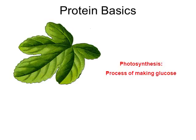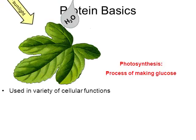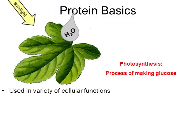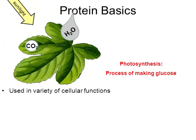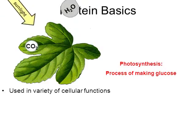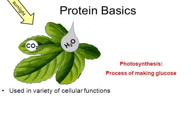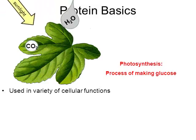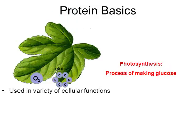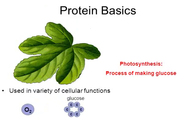A few basics first about proteins. Proteins are used in a wide variety of cellular functions. Later in the school year, we're going to go into photosynthesis in more detail. From the animation, you can see that photosynthesis requires three basic reactants: sunlight, carbon dioxide, and water. Through the process of photosynthesis, we create oxygen and glucose. But in order to make oxygen and glucose, very special proteins are required along the way.